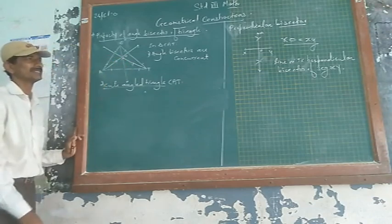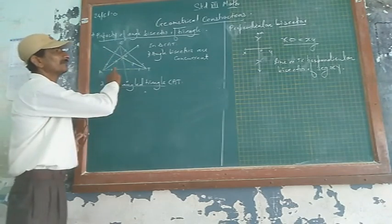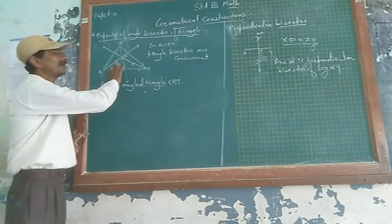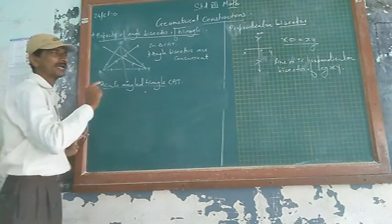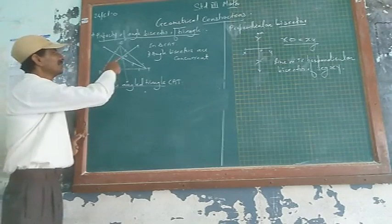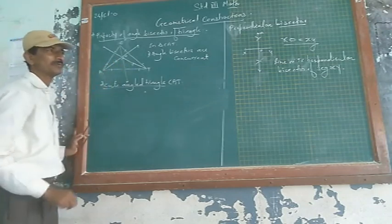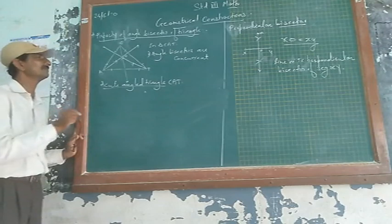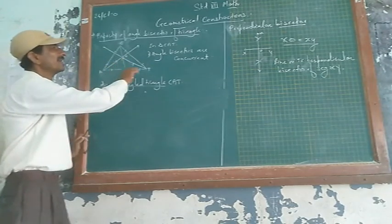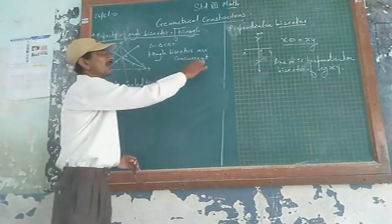You will get 3 angle bisectors and you will find that when you draw very accurately with fine pointed pencil, all construction must be done with fine pointed pencil. Accuracy is important. Then you will find that angle bisectors are concurrent.